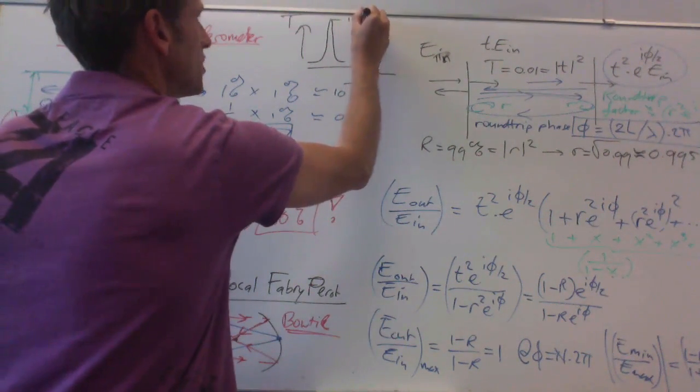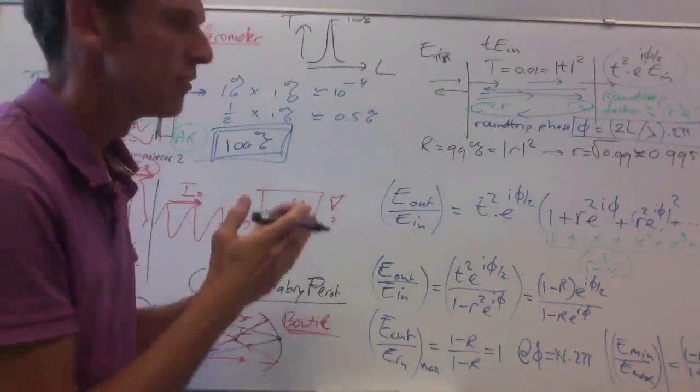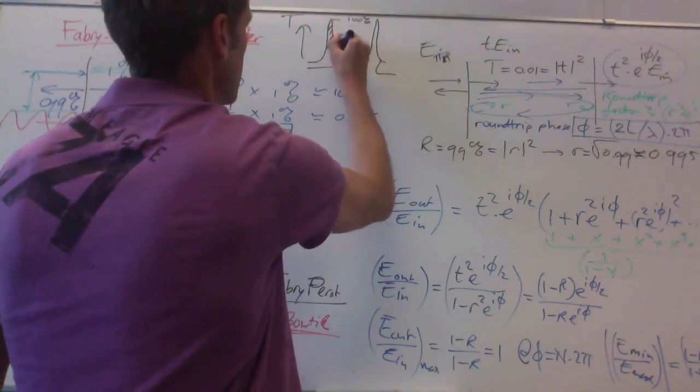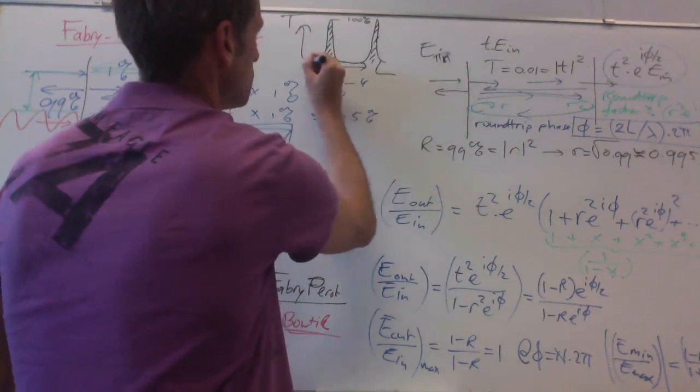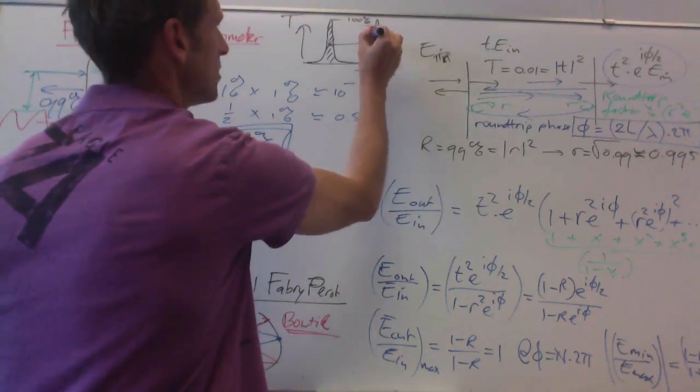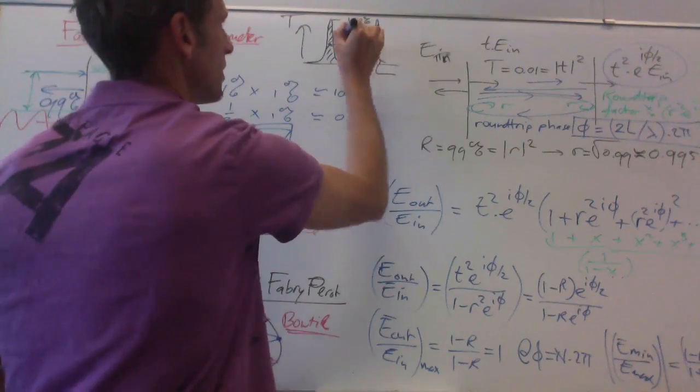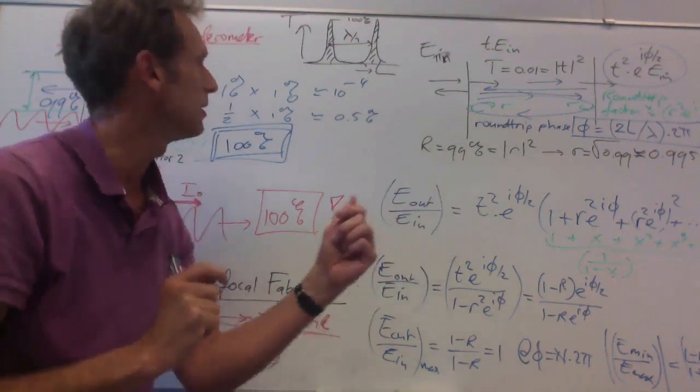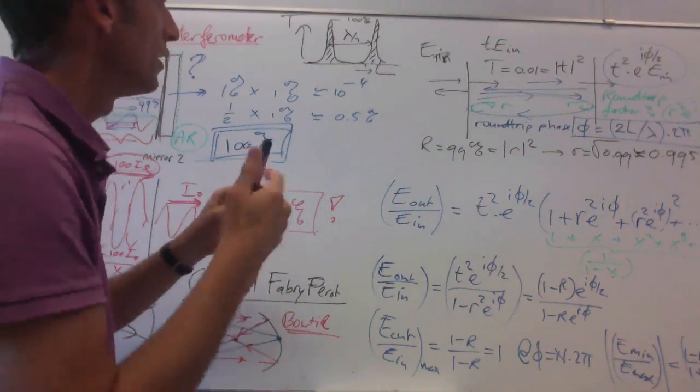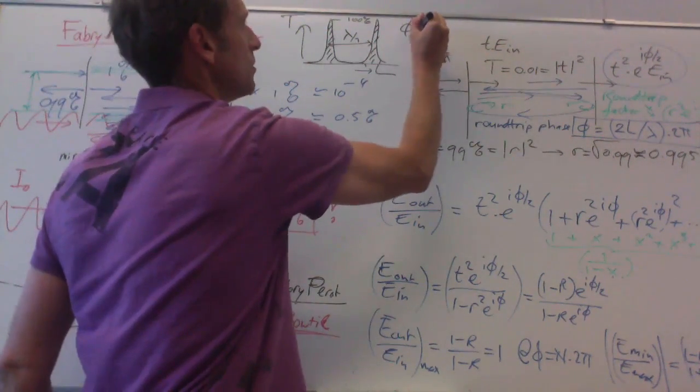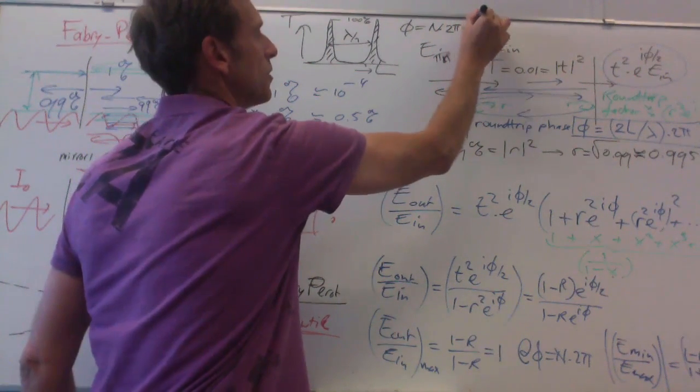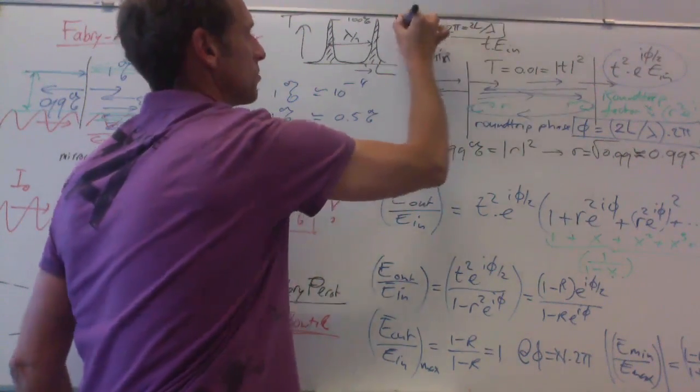And you, for this ideal system, get 100% transmission. For other wavelengths it doesn't fit. And so then you typically get a transmission like this as a function of the length of the cavity, where this distance is λ/2. So every time you modify the length a tiny bit by λ/2, you reach a point where the phase fits again, the round trip phase fits again into the cavity, is a multiple of 2π, this criteria.